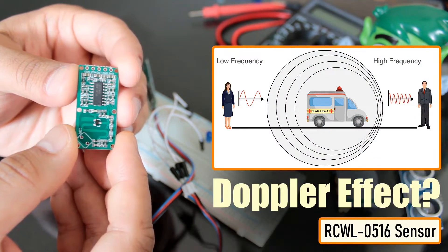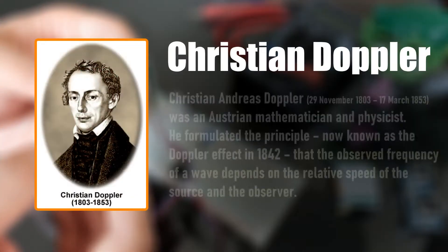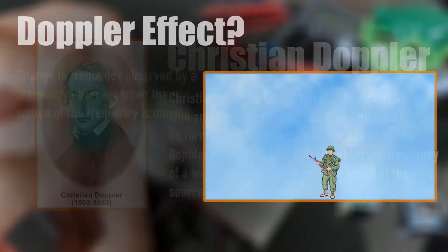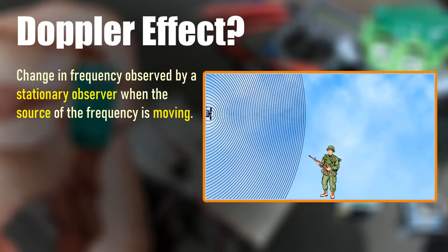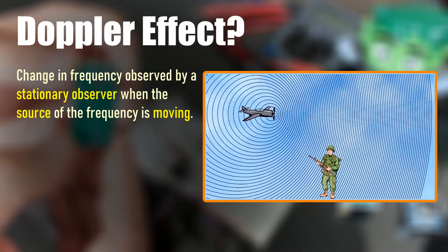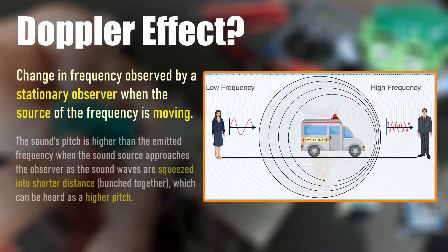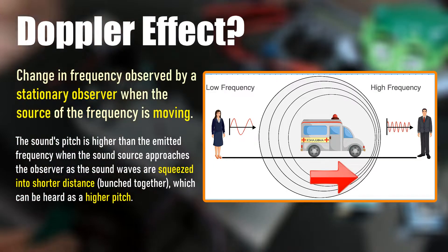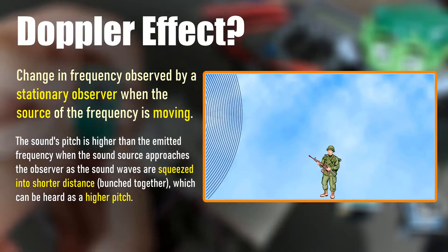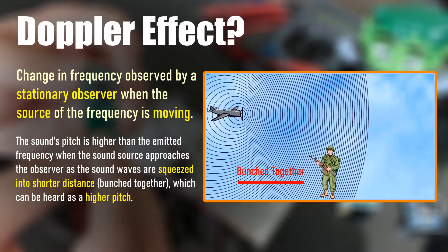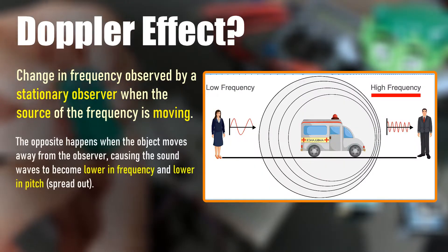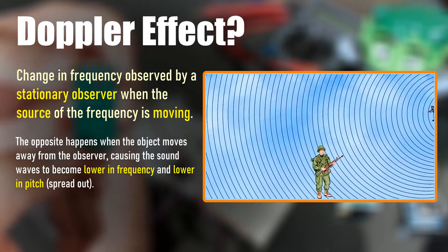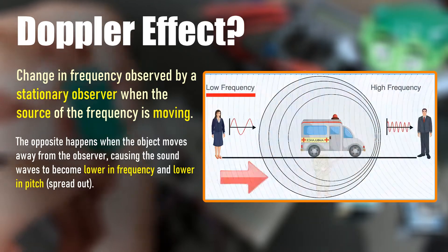The Doppler effect is named after the Austrian physicist Christian Doppler who described this phenomenon in 1842. He described the change in frequency observed by a stationary observer when the source of the frequency is moving. The sound's pitch is higher than the emitted frequency when the sound source approaches the observer, as the sound waves are squeezed into a shorter distance which can then be heard as a high pitch. The opposite happens when the object moves away from the observer, causing the sound waves to become lower in frequency and lower in pitch.